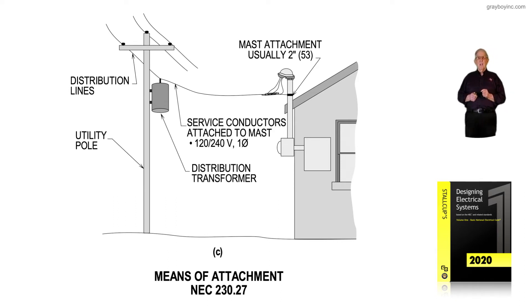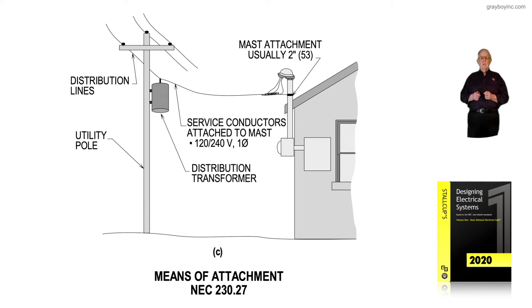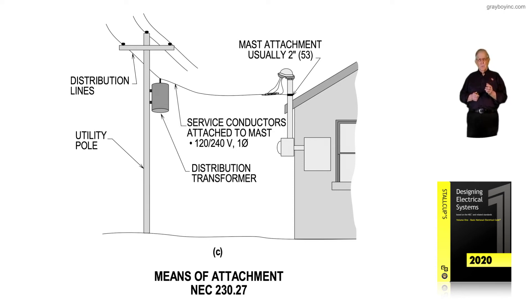We're using a mass attachment there, and we have the clearances of 230.24 from the finished ground area. Figure 6-15C illustrates an overhead drop supported at the utility pole and supported to the riser with a mass attachment. It shows three conductors wrapped around a messenger cable support, with a bare messenger cable serving as both the neutral and the supporting means.